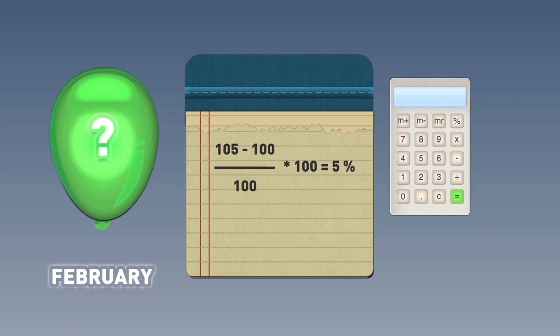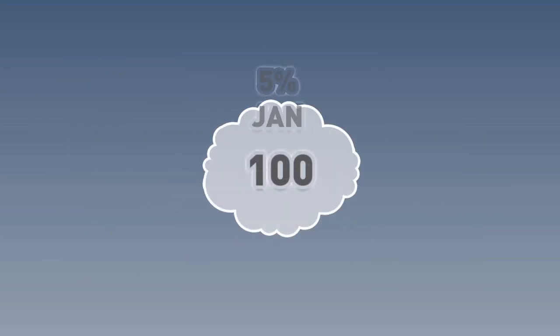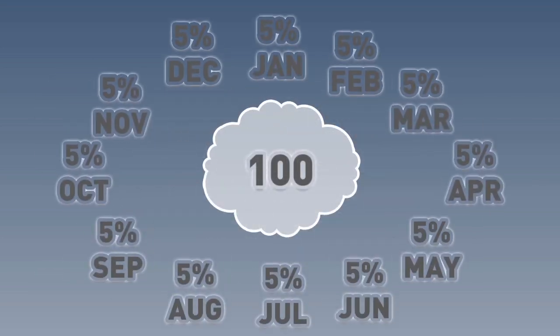Now suppose that we multiplied 5% by 12 to get the annual inflation. We would get 60% as our annual inflation figure, right? If we use this figure, then we would get the following for the CPI at the end of the year. The problem with doing this is that it assumes that each month we are taking 5% of our original 100, which is equal to 5, and then adding it to the CPI.